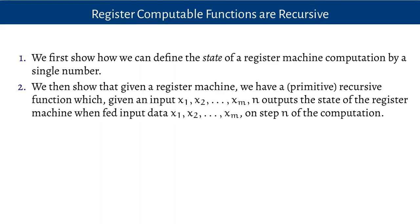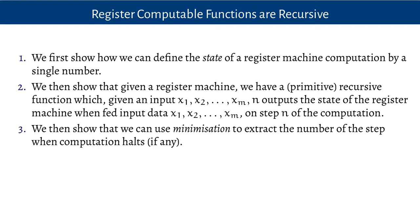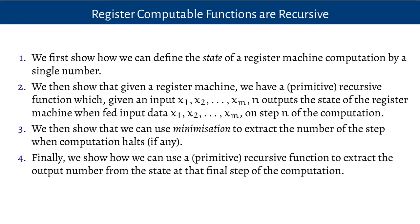The first thing to notice is that we can define everything we need to know about the state of a register machine by means of a single number. Then we'll show that given a register machine, there is a primitive recursive function which, when given inputs x1, x2, up to xm and n as an extra input, outputs the state that the register machine is in when fed the input data x1 through xm after n steps of computation. Then we show that we can use minimization to extract exactly which step the computation halts, if there is one. Finally, we can use a primitive recursive function to extract the output of the function from the state that the register machine is in at the final step of its computation.